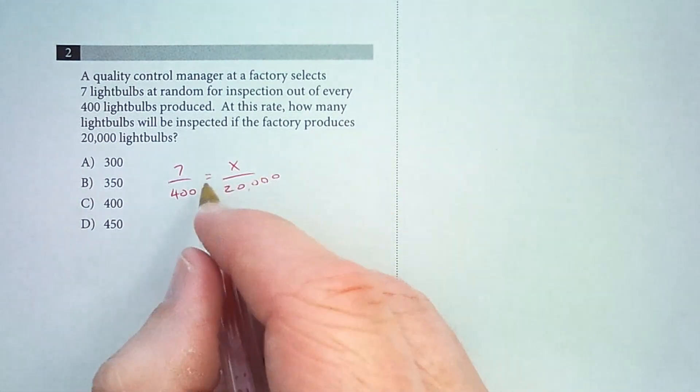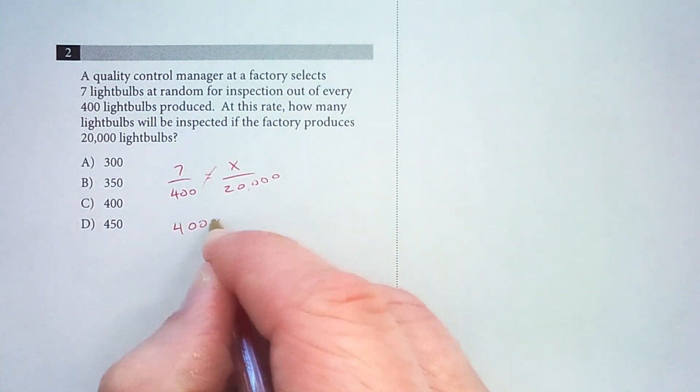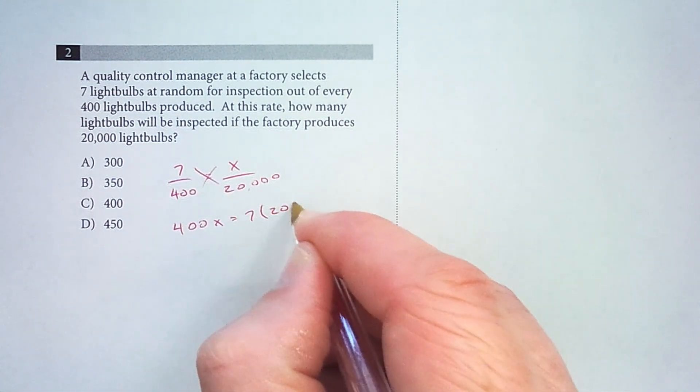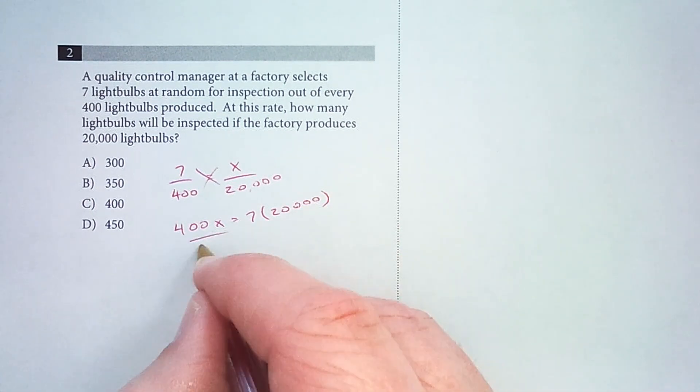We'll do our cross products and divide, so that's 400x equals seven times 20,000, and then we'll divide by 400.